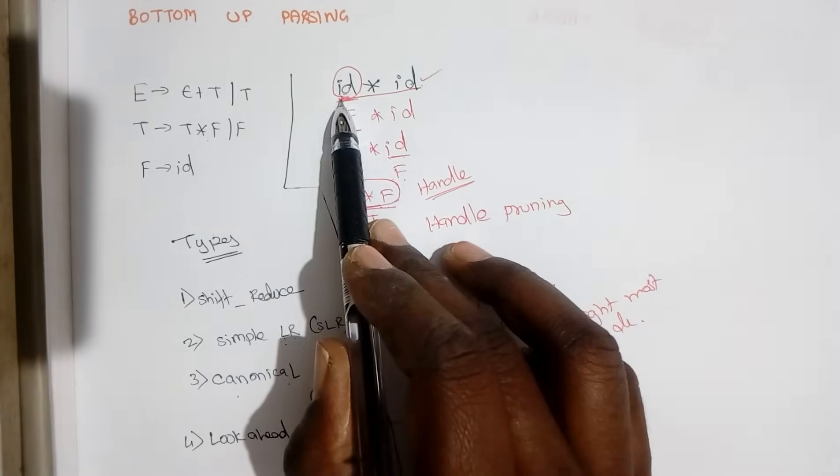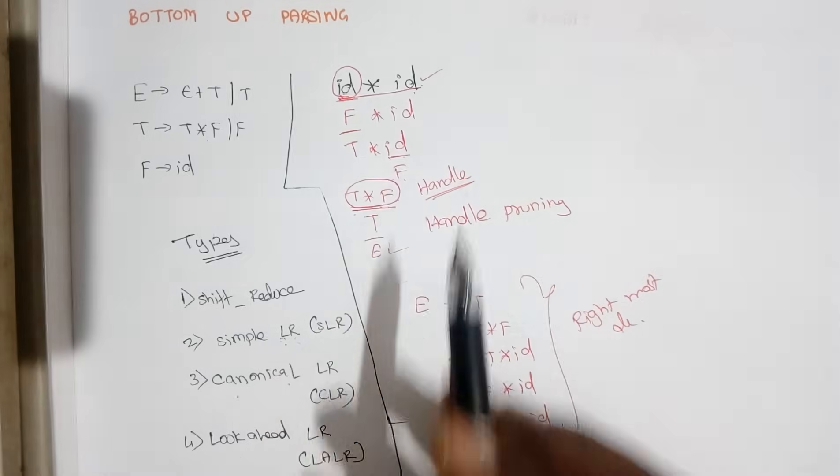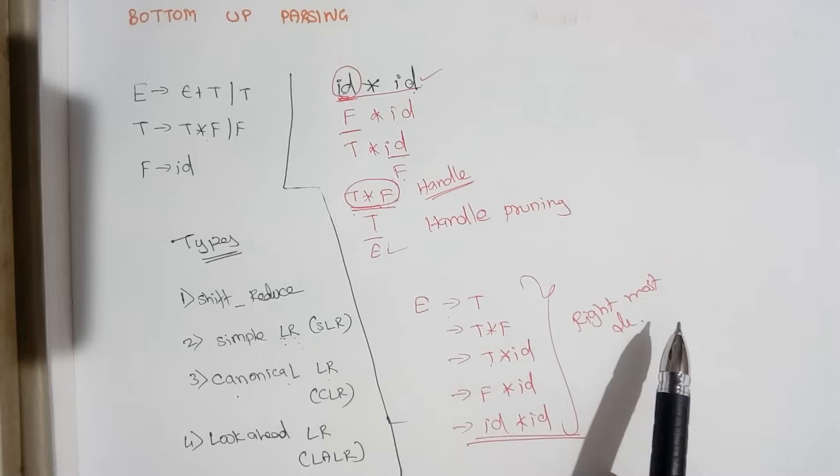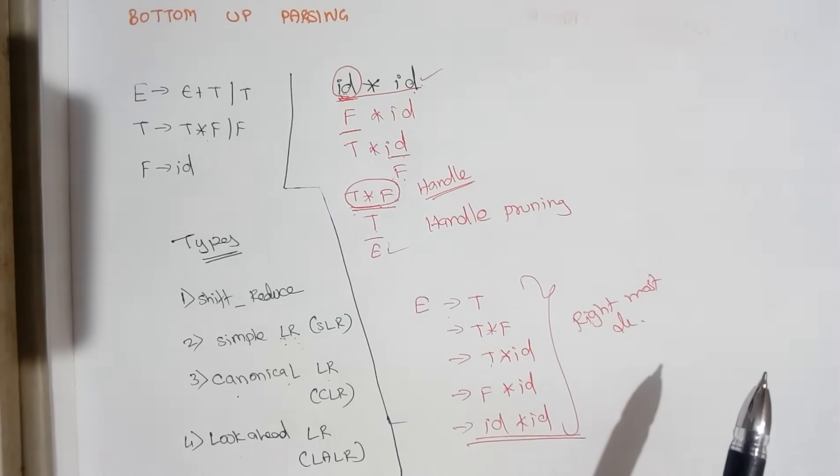While making a transition, we scan the input from left to right and this R actually denotes, we are going to use rightmost derivation in the reverse format of it. Okay, thank you.